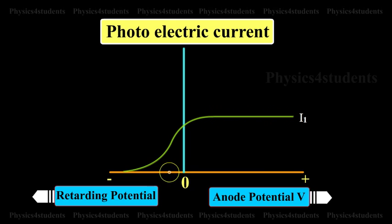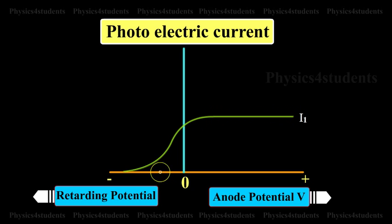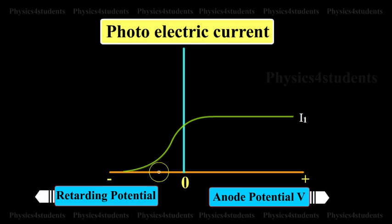If the potential of the plate A is made negative, the photocurrent does not immediately drop to zero but flows in the same direction as for positive potential. This shows that the photoelectrons are emitted from the plate C with finite velocity.